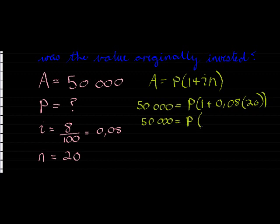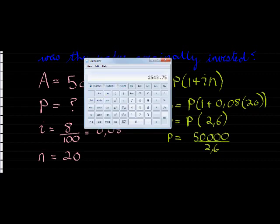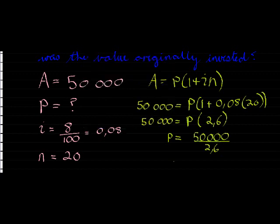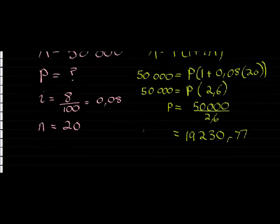One plus zero comma eight times twenty should give us two comma six. Which means that my present value is fifty thousand divided by two comma six. Let's calculate: fifty thousand divided by two point six. And our answer is nineteen thousand two hundred and thirty rand and seventy-six cents. That was the amount originally invested and that grew to a total amount of fifty thousand over twenty years.